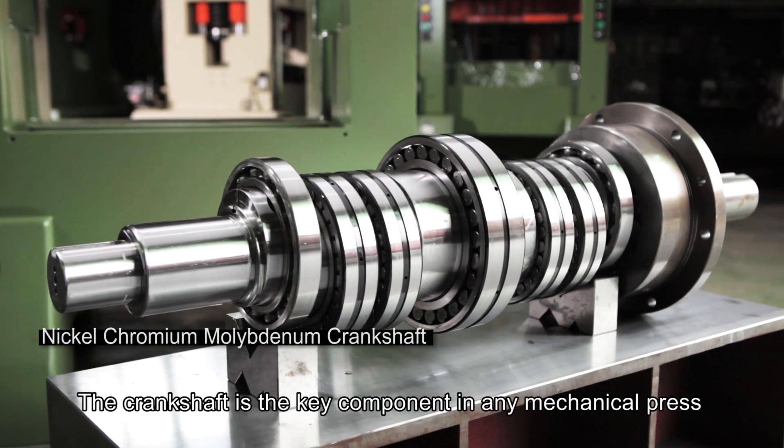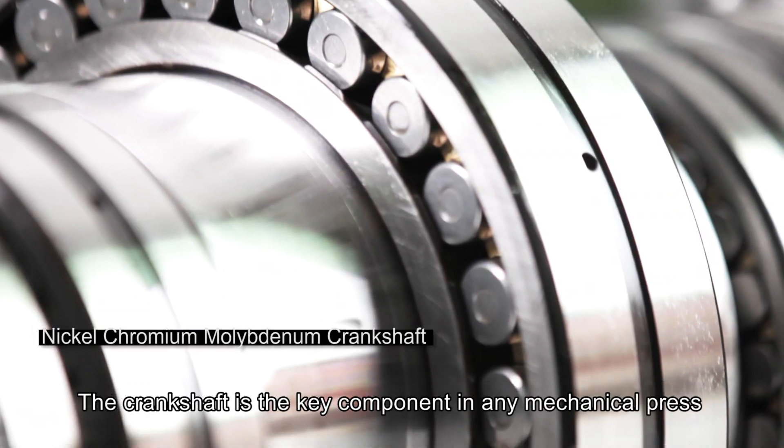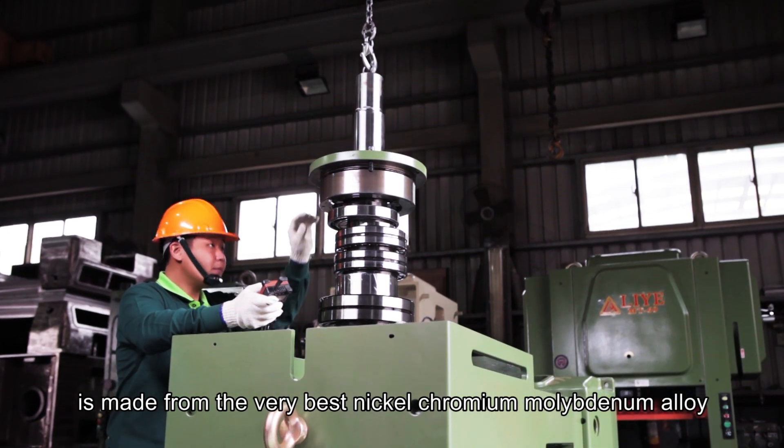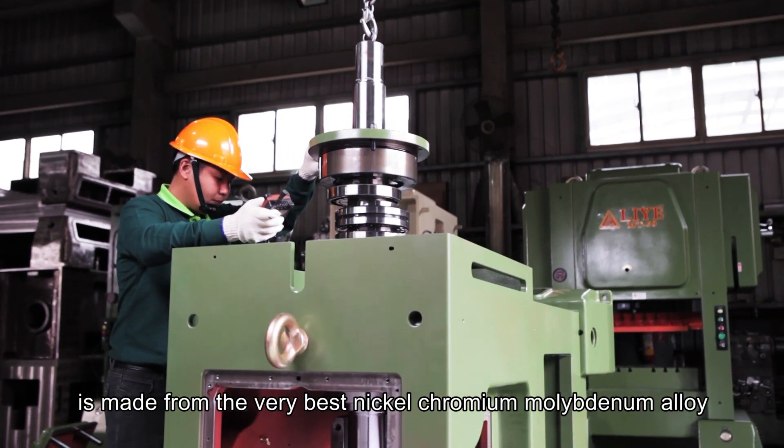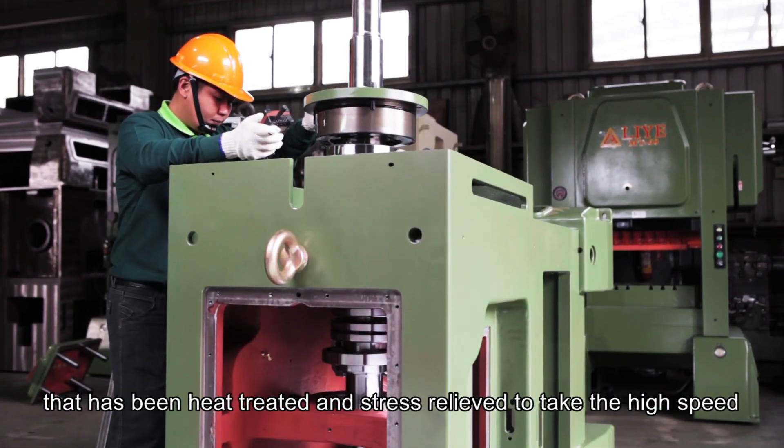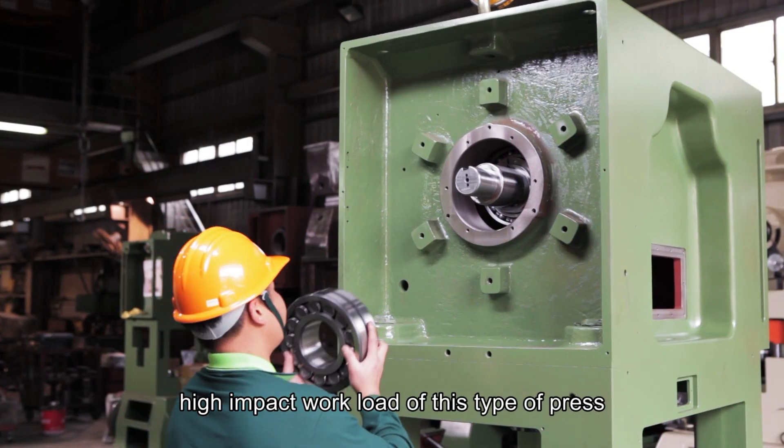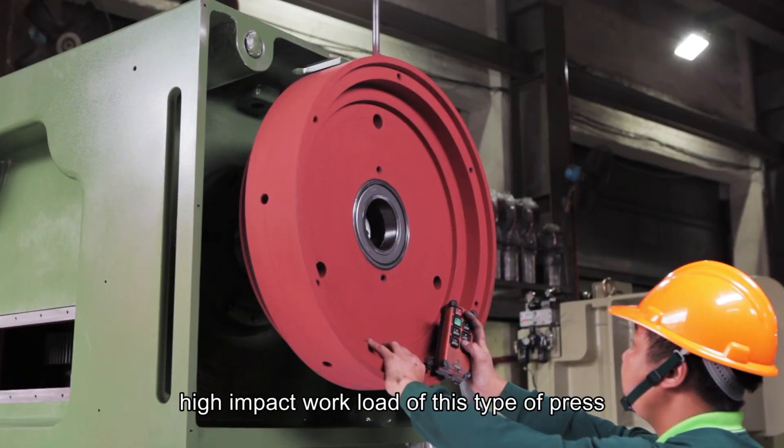The crankshaft is the key component in any mechanical press. This Li-Air press crankshaft is made from the very best nickel chromium molybdenum alloy that has been heat-treated and stress relieved to take the high-speed, high-impact workload of this type of press.